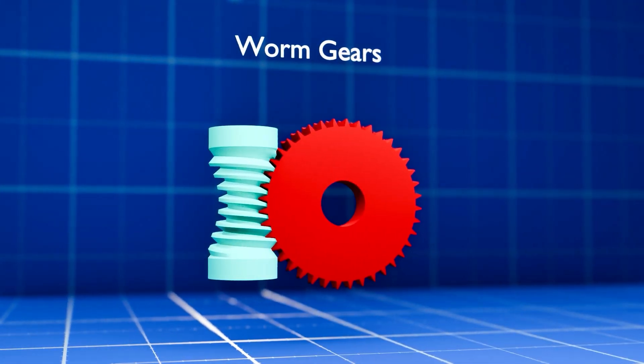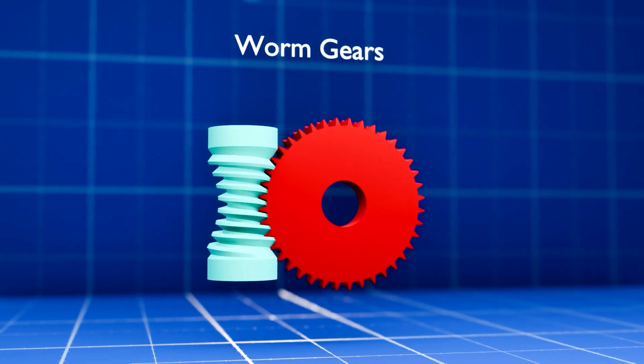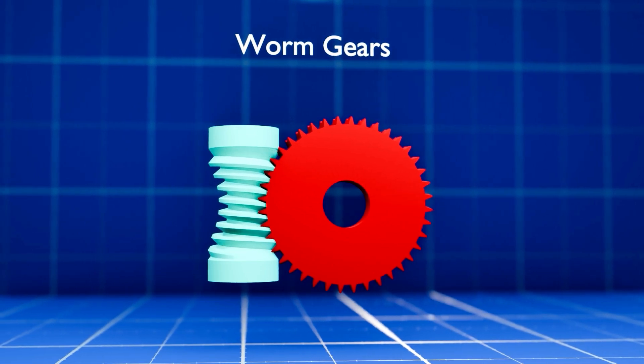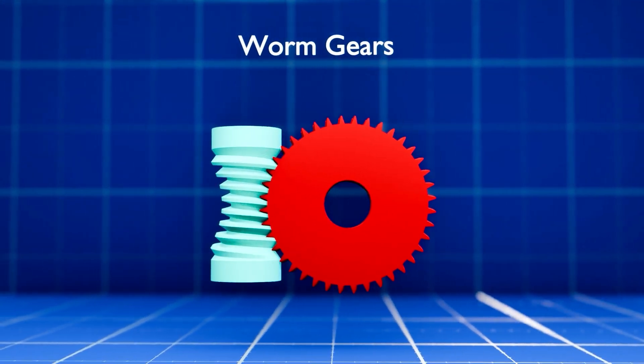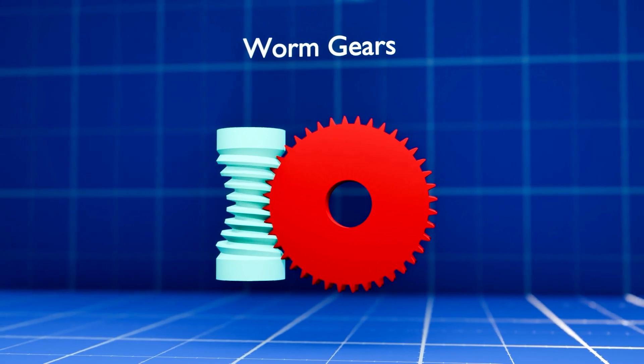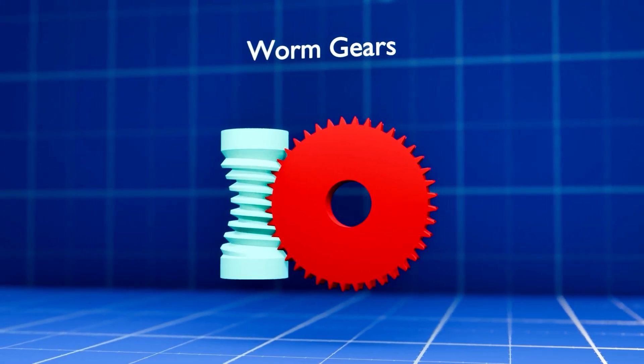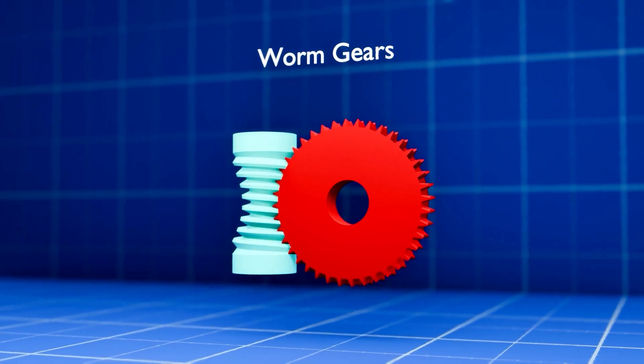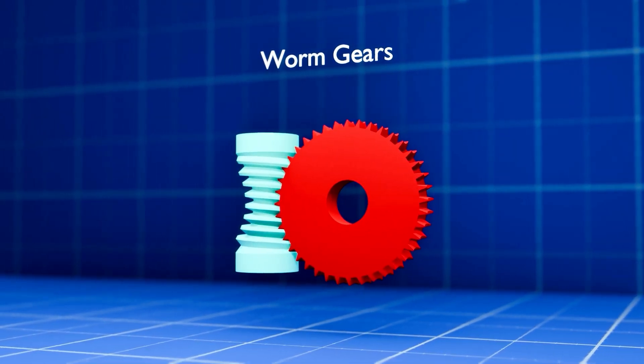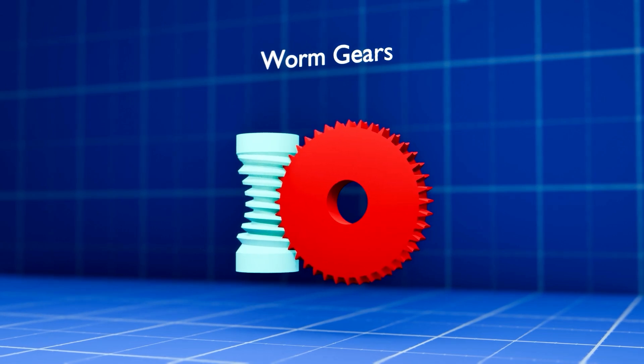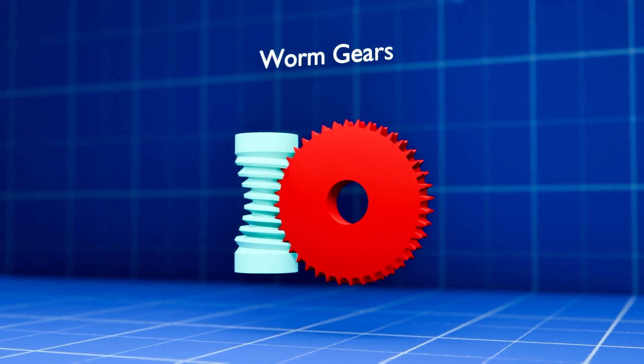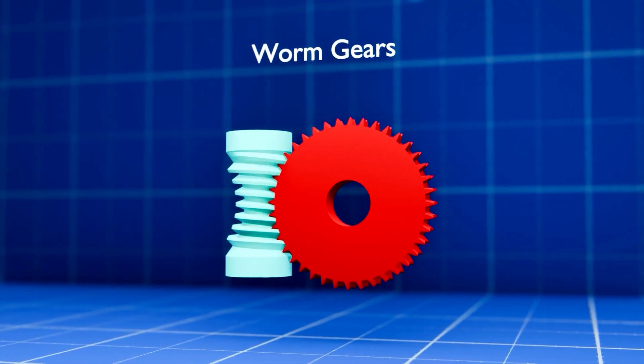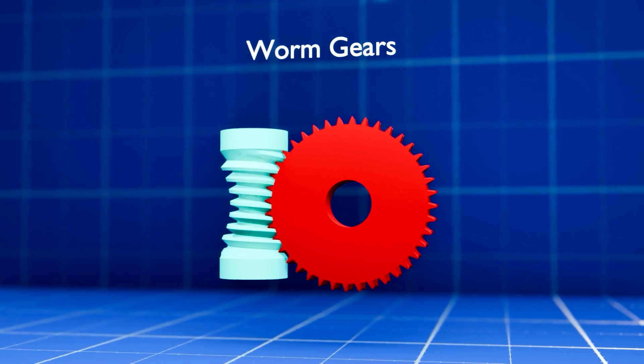For achieving very high-speed reduction ratios between non-parallel and non-intersecting shafts, often at a 90-degree angle, worm gears are the go-to solution. A worm gear set consists of a worm, which looks like a screw, and a worm wheel, which is the toothed gear that meshes with the worm. For each revolution of the worm, the worm wheel advances by only one tooth, resulting in a significant reduction in speed. Many worm gear sets have a unique property called self-locking, meaning the worm can easily drive the worm wheel, but the worm wheel cannot easily drive the worm backwards. This acts like a built-in brake.